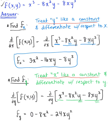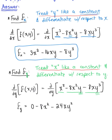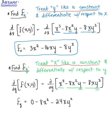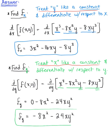We don't really need the zero in front — we only included it for emphasis since this is our first time looking at this. Our final answer for the partial derivative of f with respect to y is: -8x² - 24xy².